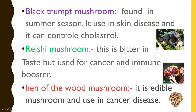Third is the black trumpet mushroom. It is found in the summer season. It is used in skin diseases and can also help control cholesterol. It is bitter in taste, and it is also used in cancer treatment and as an immune booster.